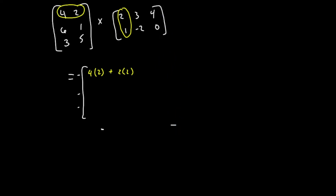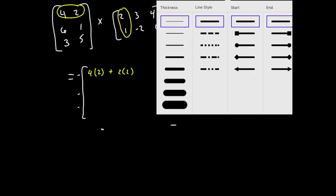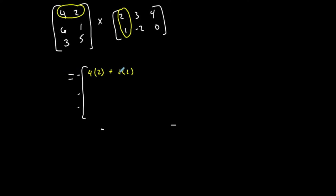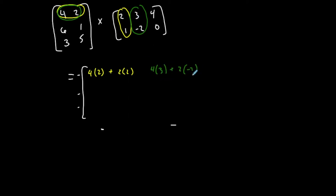Now let's do the element in row one, column two. I'll take row one of my first matrix, now column two of my second matrix. Always row then column — row in first matrix, column in second. Four times three, plus two times negative two. Now the element in row one, column three — row one, column three: four times four, plus two times zero. That's just row one of the three by three matrix.